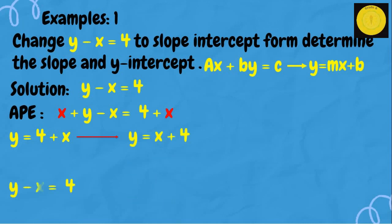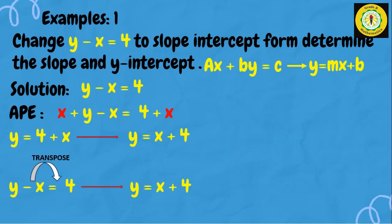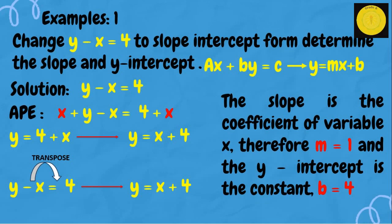The second way — the easiest way — is using transposition. The negative x on the left side of the equation is transposed to the right side. Using either transposition or the addition property of equality, we arrive at the same answer. Now, the slope is the coefficient of variable x, so m equals 1, and the y-intercept is the constant, so b equals 4.